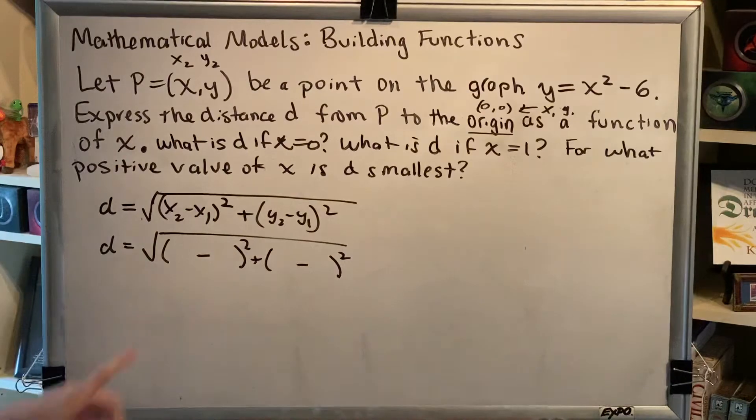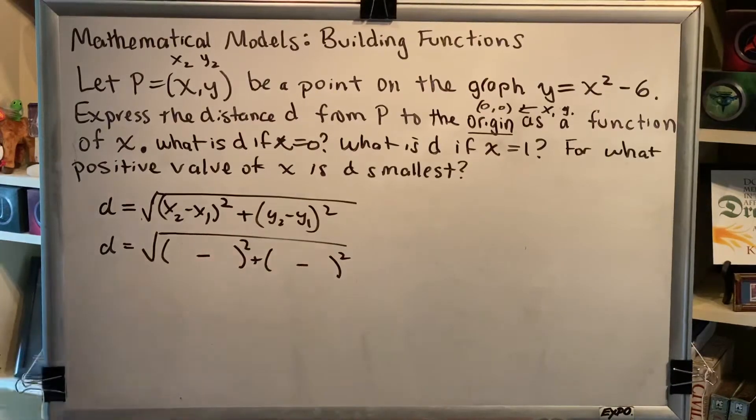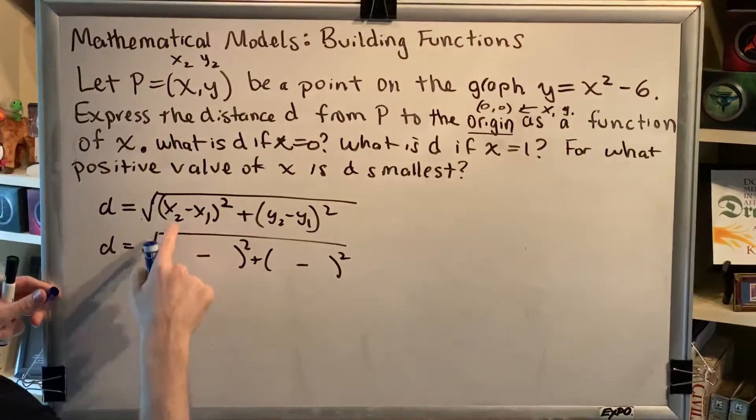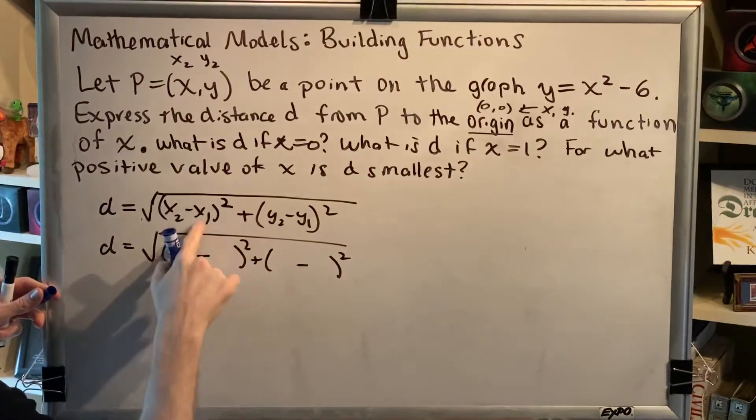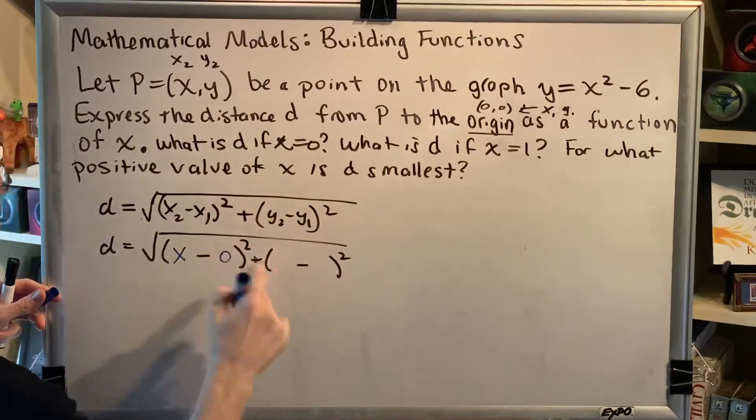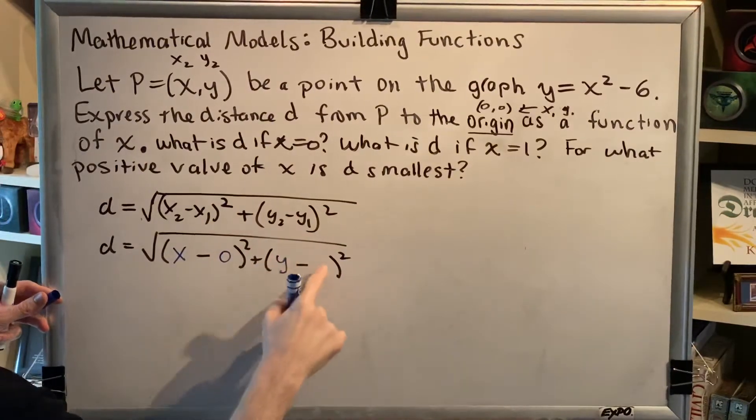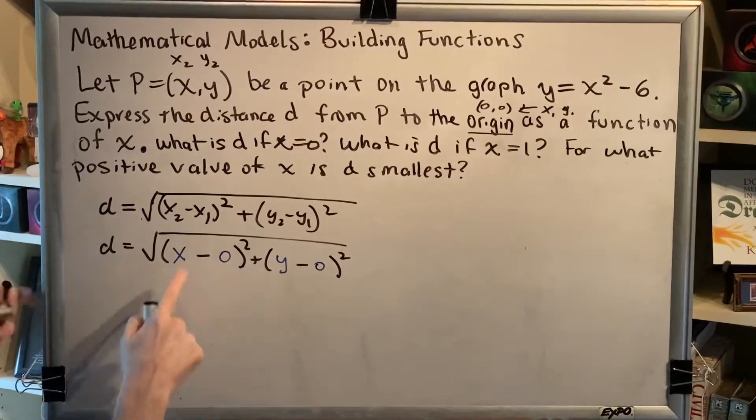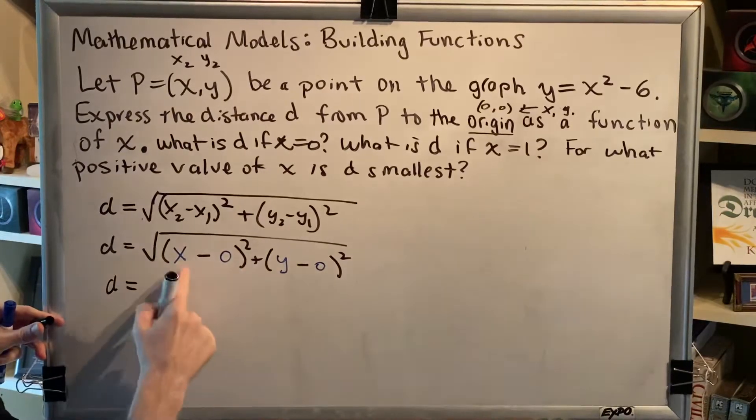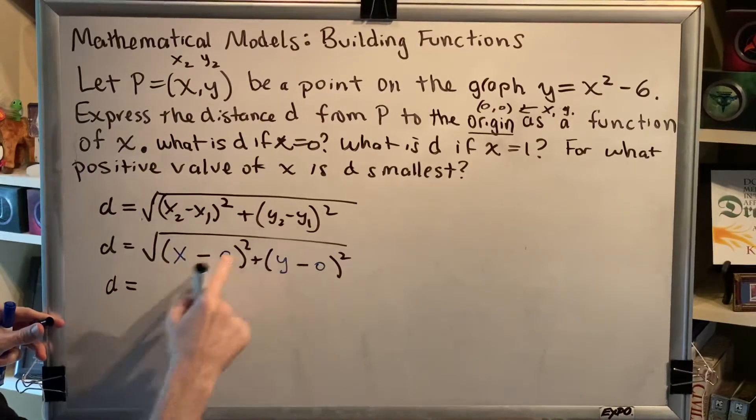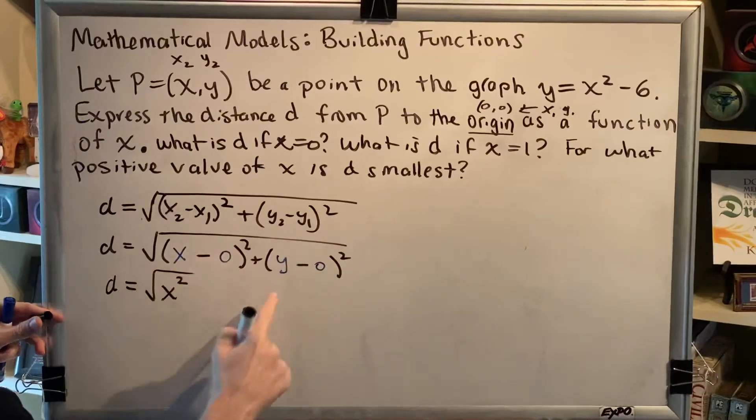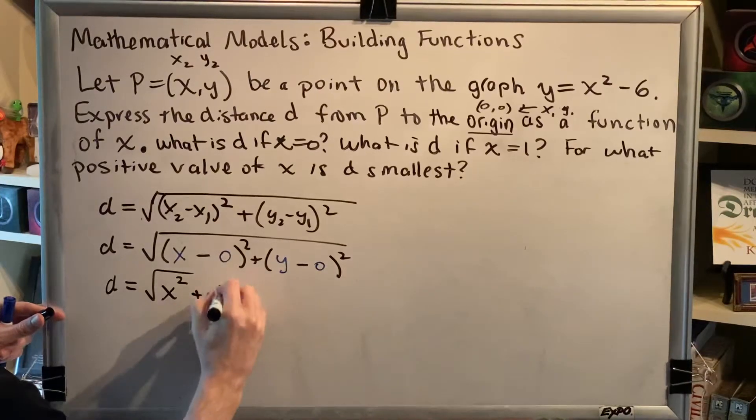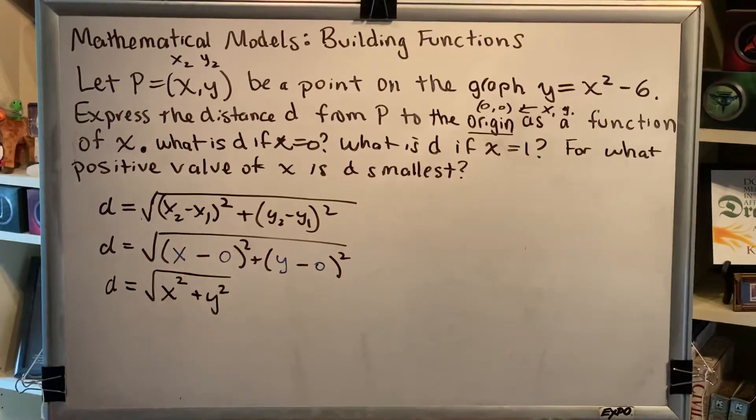Okay, notice that the distance formula has four places for you to put things. So let's go ahead and fill those in. x₂ is x, x₁ is 0, y₂ is y, y₁ is 0. Okay, so good news. Anything minus 0 is itself. So x-0 is just x, and when you raise it to the power 2, you get x². y-0 is just y, raised to the power 2, you get y². So this is d=√(x²+y²).